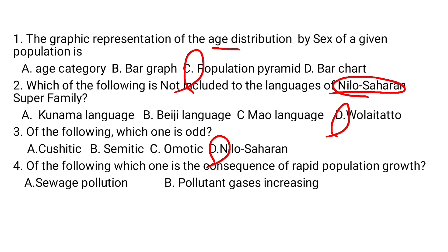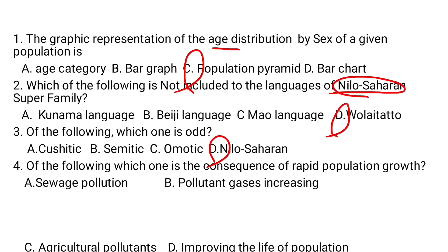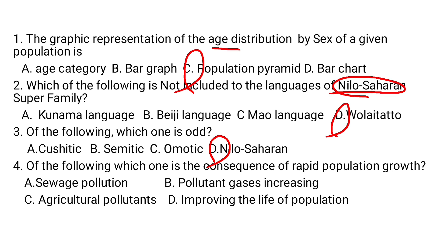Question number 4. Of the following, which one is a consequence of rapid population growth? A. Sewage pollution, B. Pollutant gases increasing, C. Agricultural pollutants, D. Improving the life of population. Sewage pollution, pollutant gases increasing, and agricultural pollutants are consequences of rapid population growth. Improving the life of population is not. So the answer is D.